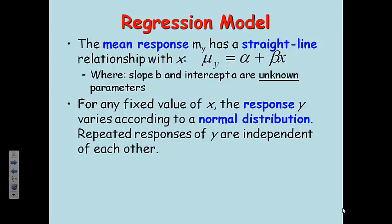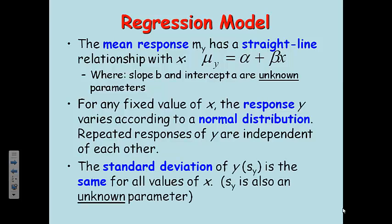They're out there somewhere, they do exist, there is some population for which they're defined, we just don't know what they are, so we're trying to estimate them. For any fixed value of x, the response, the y value, will vary according to a normal distribution, and repeated responses of y have to be independent of each other. This is our independence assumption, and we also have established that all the y's have to vary according to a normal distribution, otherwise we can't do this regression model.